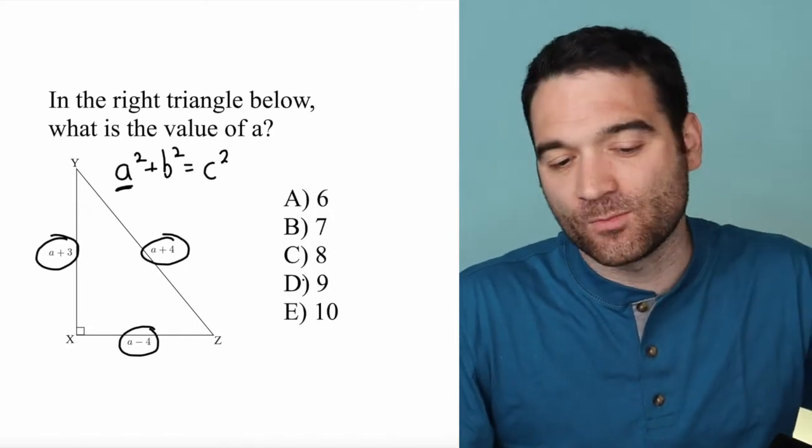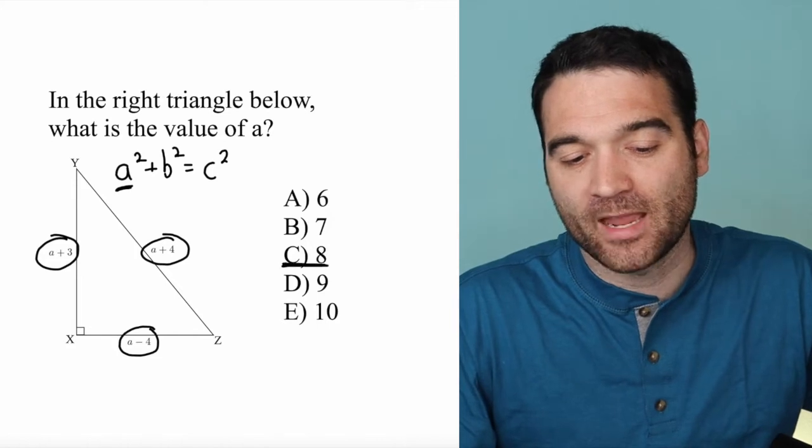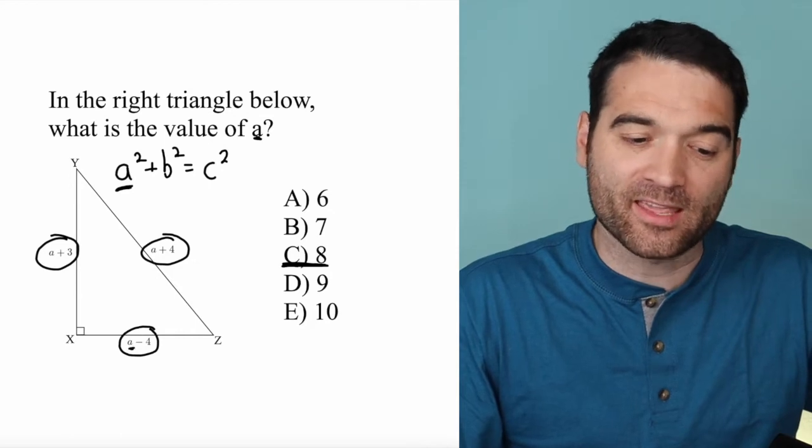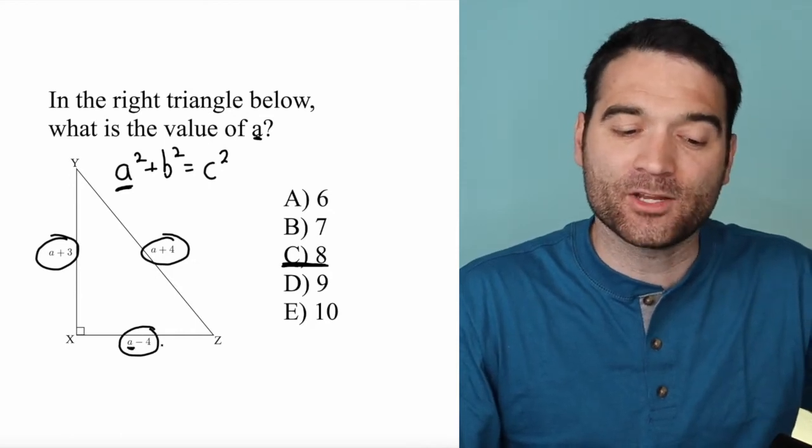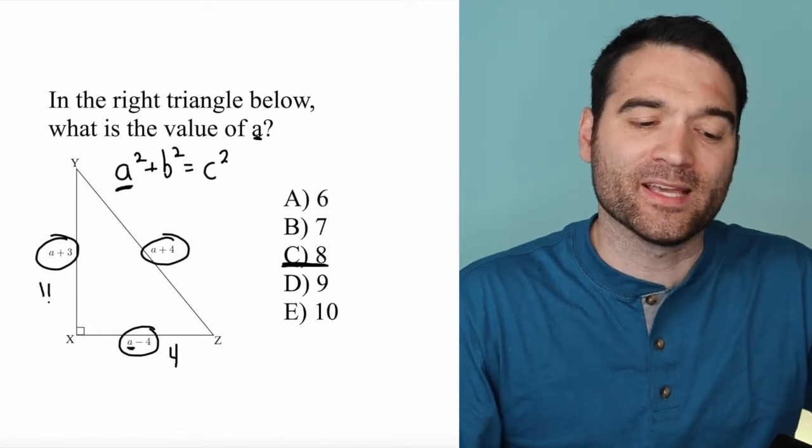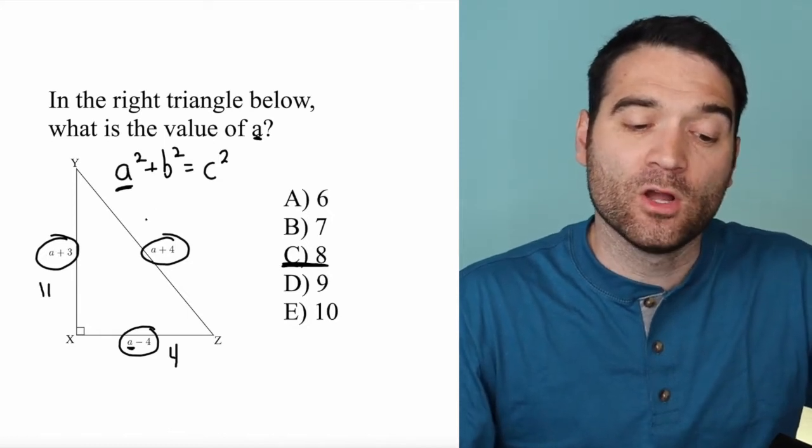Let's start somewhere in the middle. We'll start with answer option C, which is 8. Let's suppose a equals 8. So 8 minus 4 would be 4, 8 plus 3 would be 11, and 8 plus 4 would be 12.